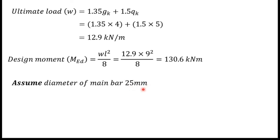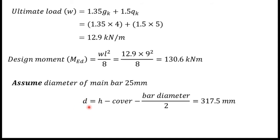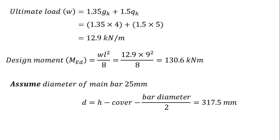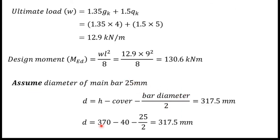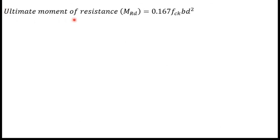Next, assume a diameter of 25 millimeters for the main tension bar — this is an assumed value; you could choose 20 or 16 millimeters. The effective depth d is found using: d = h − cover − bar diameter/2. Here h = 370 mm, cover = 40 mm, and bar diameter = 25 mm. Substituting these values gives d = 317.5 millimeters.